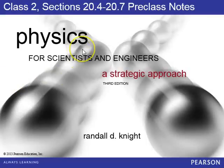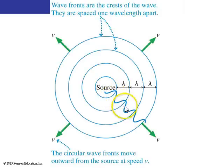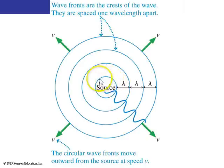We're finishing off chapter 20 on traveling waves, and let's talk about waves in two and three dimensions. If you look at a wave coming from a source and plot the displacement versus distance, you'll see crests and troughs. Since the source is radiating in all directions, if you connected the points where all the crests were, you would see circles, and those are called wave fronts. Wave fronts mark the crests of the wave, and the wave fronts are one wavelength apart.